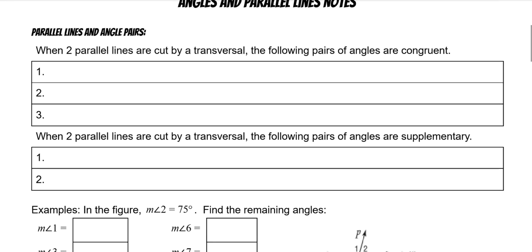So first of all, when two parallel lines are cut by a transversal, the following pairs of angles are congruent: corresponding angles are congruent, and also alternate interior and alternate exterior — both of the alternates.